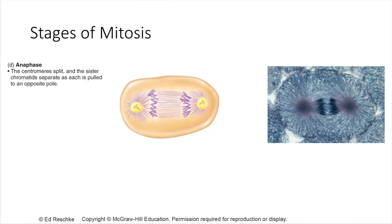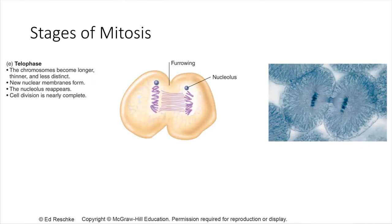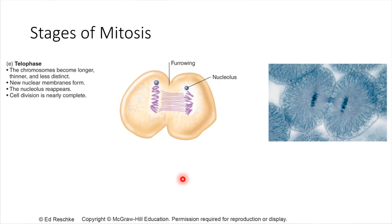Then comes telophase. Telophase is when the chromosomes start to relax a little bit. This happens as the nuclear membrane reforms — each of these groupings of chromosomes is going to get its own nuclear envelope formed around it. At this point, mitosis is essentially finished. All that would need to take place after this is that the rest of the cell contents — the cytoplasm — would need to be divided as well.